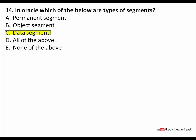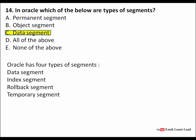In Oracle, which of the following are the types of segments? There are four types of segments in Oracle: data segment, index segment, rollback segment, and temporary segment. The answer is C — data segment. You have to remember the names of all four segment types.